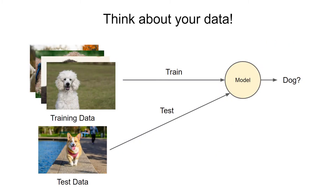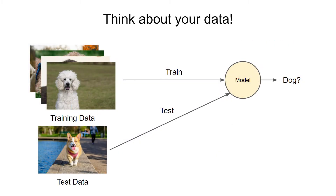I then gave you an example of how training a model with biased data can produce a biased model. This is important as it relates to ethics as well as creating a model that meets your needs.